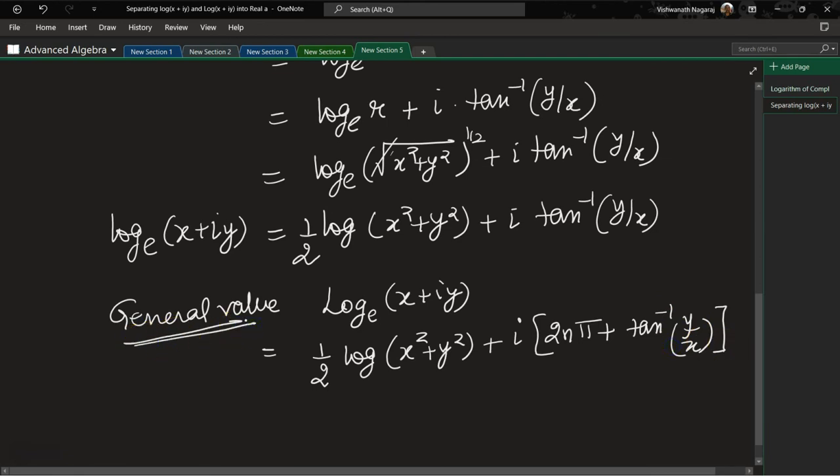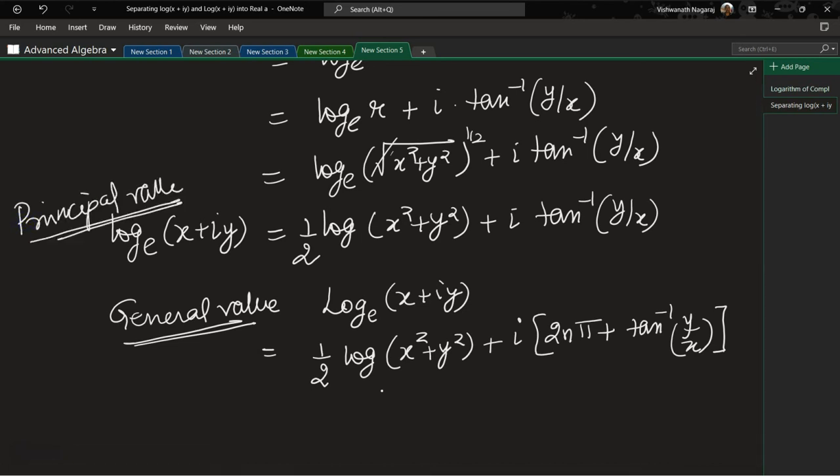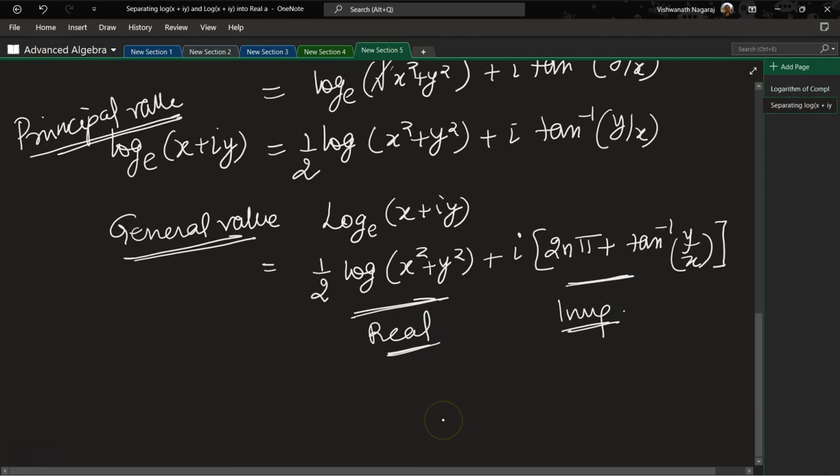So this becomes the general value and this becomes the principle value. So that is separating the log of a complex number into its real part and its imaginary part. That's it, bye.